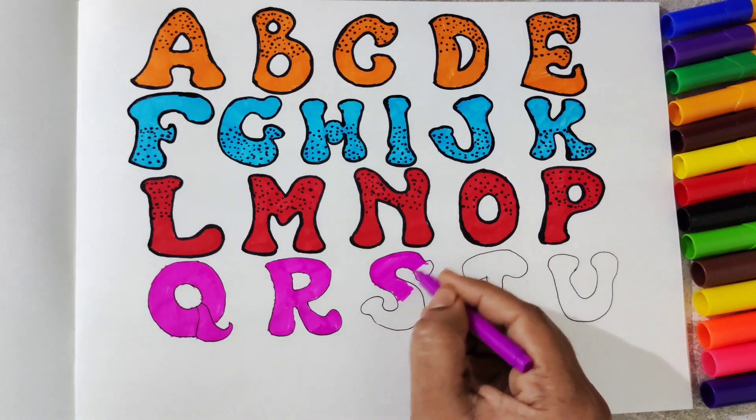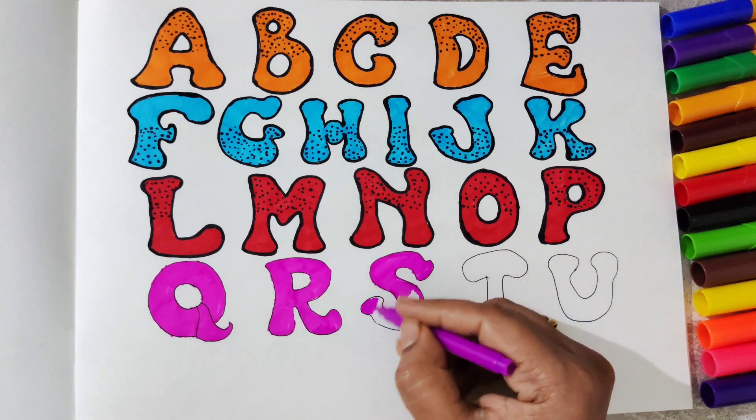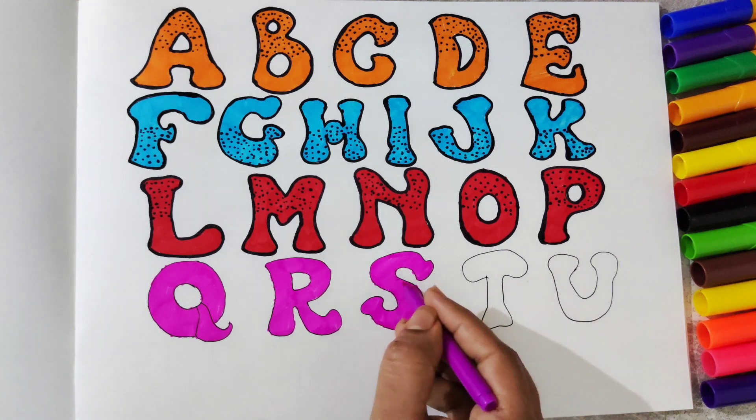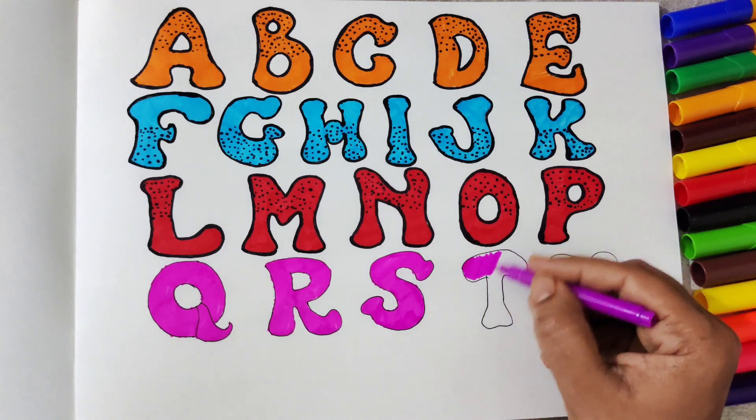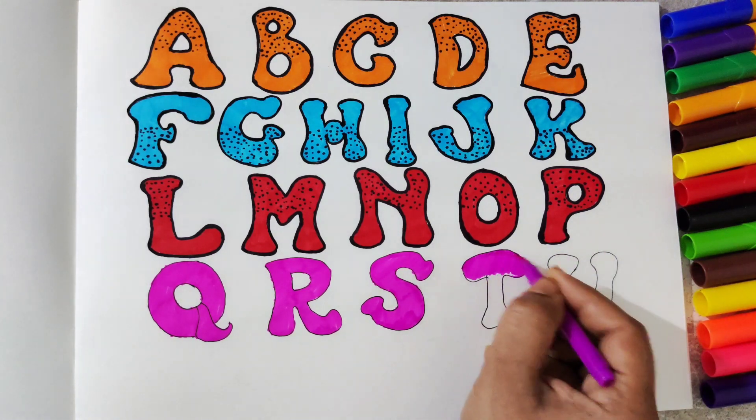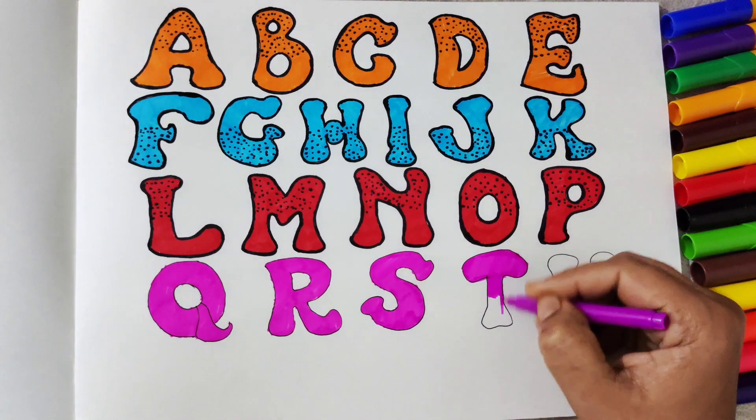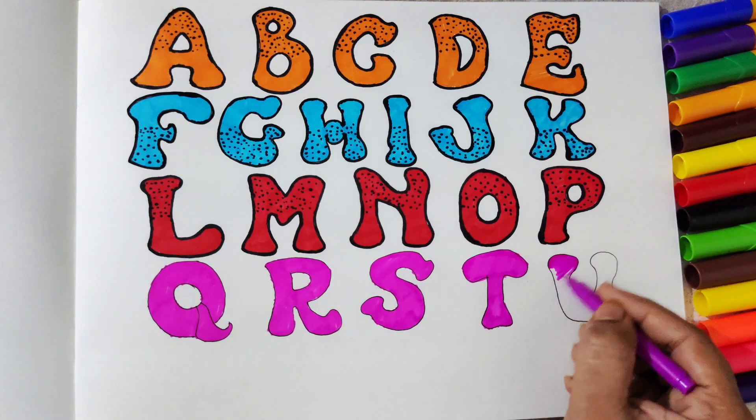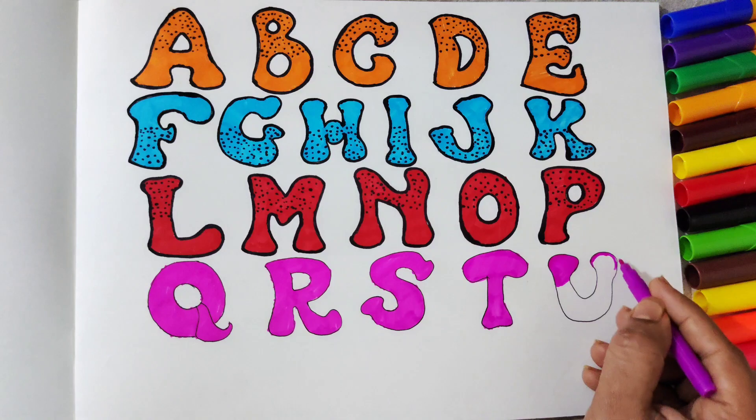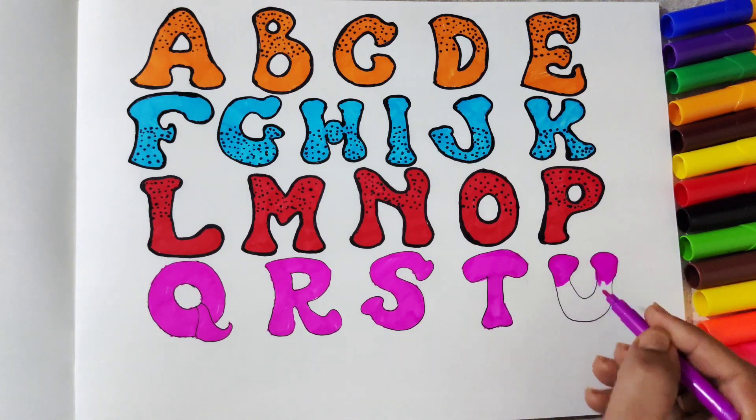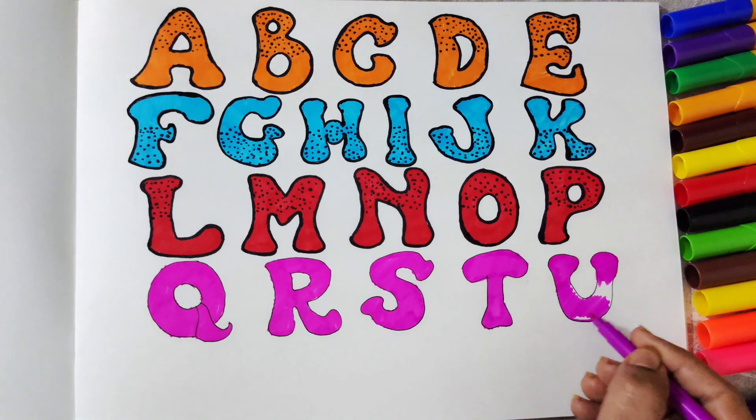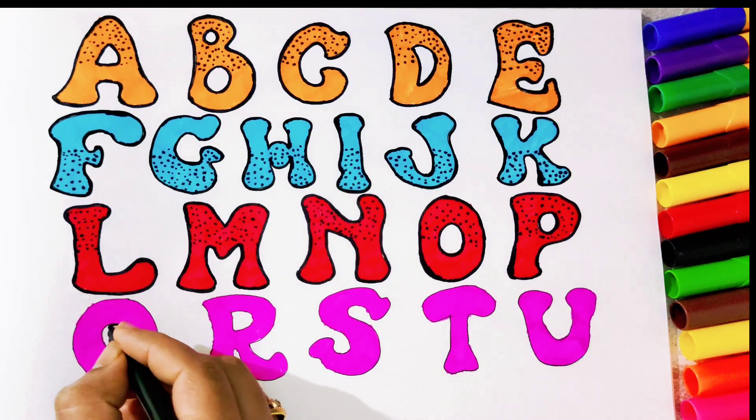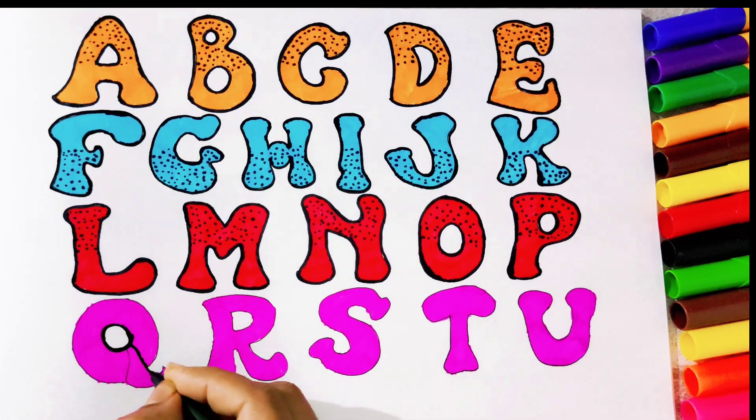S for sun. S alphabet is looking good in pink color. You should also try it at home. Draw some random alphabets and pick different colors and start coloring them. So we have completed alphabet T and let's start with U alphabet. We will have total five alphabets in pink color: Q, R, S, T, and U.